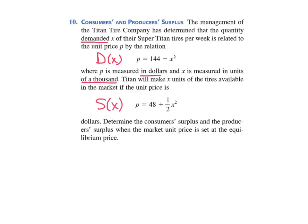So we're asked to determine or compute the consumer surplus and the producer surplus. And the market unit price is going to be set at equilibrium price. And equilibrium price is, that's the key to calculating these. We're going to set these two functions equal to each other. So let's go ahead and do that. We'll start on the next screen and I'll show you how to find the p-bar and the x-bar.